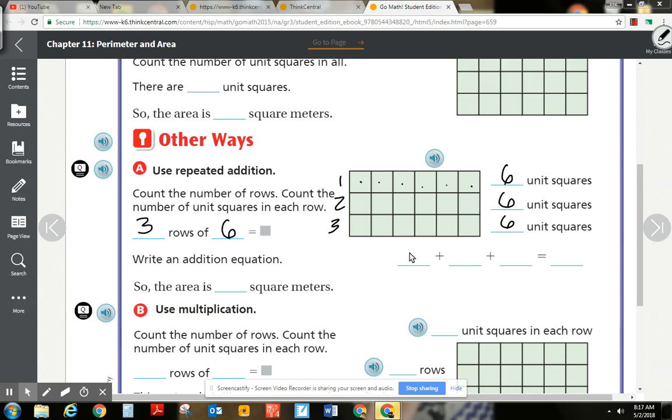So really, three, six times. Six plus six plus six. Remember, that's repeated addition. That's multiplication. It's 18. So the area is 18 square meters.